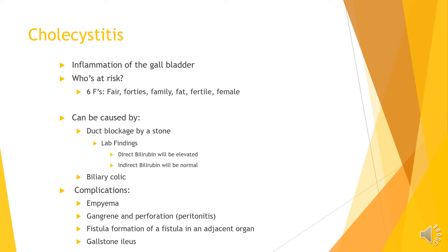With a gallstone blockage, the direct bilirubin will be elevated because the blockage interferes with the excretion into the bile ducts. The indirect bilirubin level is normal because this is the amount of bilirubin transported to the liver with albumin — there is no change in this until it turns into conjugated bilirubin and cannot be excreted through the bile ducts into the intestines. Direct bilirubin is what happens after the bilirubin is changed through the liver, and indirect is the amount of bilirubin prior to metabolism within the liver.